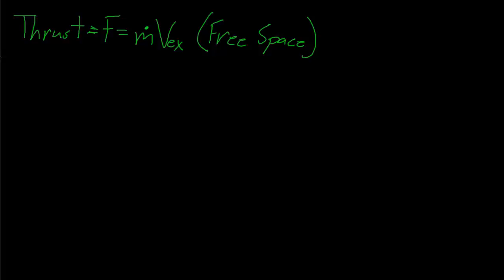I'd also like to write out a second equation for exhaust velocity, which is going to come in handy. The exhaust velocity is also equal to the gravitational acceleration on Earth, G0, which is 9.8 meters per second squared, multiplied by the specific impulse of a rocket, ISP. The specific impulse basically just tells us the efficiency of a given rocket.